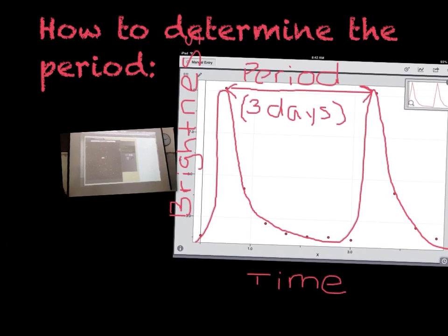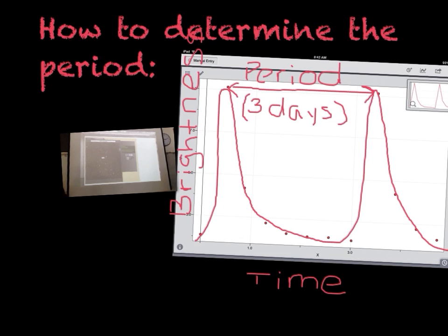Here we took those numbers and we put them on a graph, and you have your brightness and your time, and you see that over time the brightness will become brighter and dimmer. We determined that the period was three days, and you get your period from taking the crest to crest.